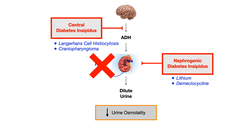As far as central DI, these associations are a little less high yield, but be on the lookout for Langerhans cell histiocytosis or craniopharyngioma. Most cases of central diabetes insipidus are idiopathic, so you don't have to memorize these — I'm just putting them here for completeness.